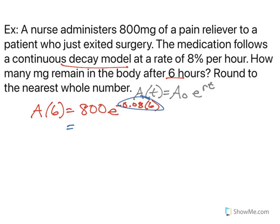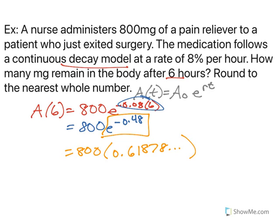Order of operation says exponents first, so negative 0.08 times 6 gives me negative 0.48. So now I can do my e to the negative 0.48 and I get 0.61878 and so on, times 800. And the amount after 6 hours is roughly 495.02, but rounded to the nearest whole number, 495 milligrams.